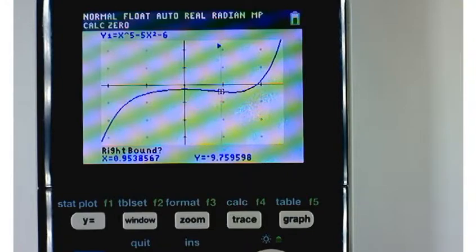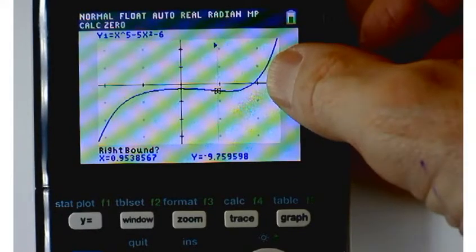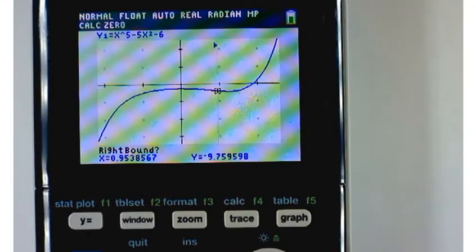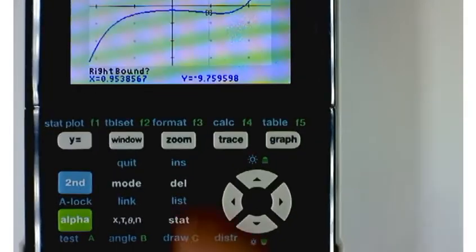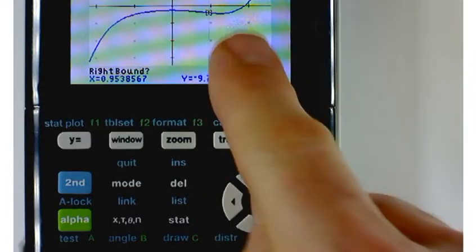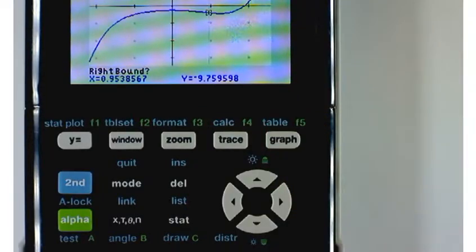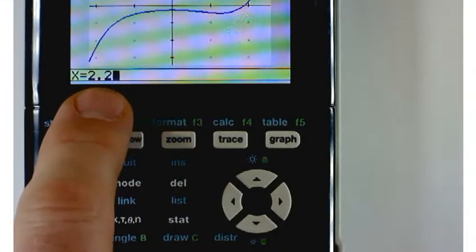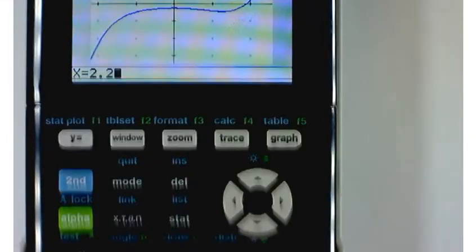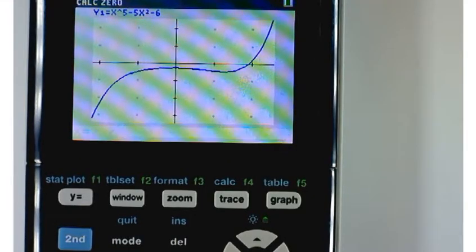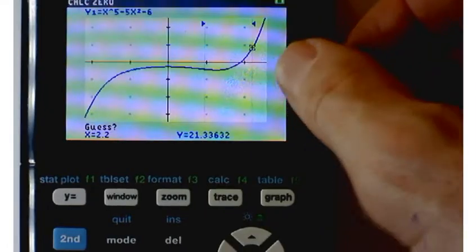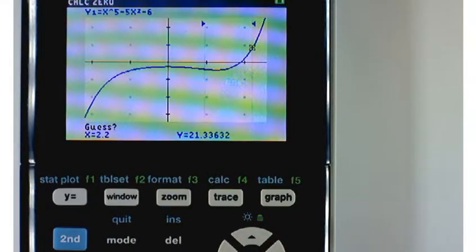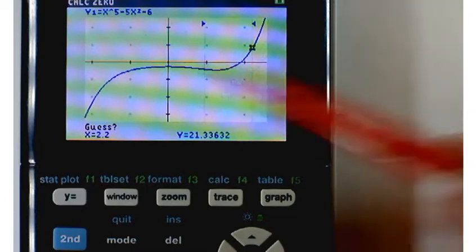Or, you could just type in a number. Like, I think something a little bit bigger than 2, say 2.2, should work. So, a right bound, I want to trap my root between these things, 2.2. Now, when you start to type it, it'll open up this little window down at the bottom. You press enter, and that's your right bound. Notice that where my graph crosses the x-axis is between these two.